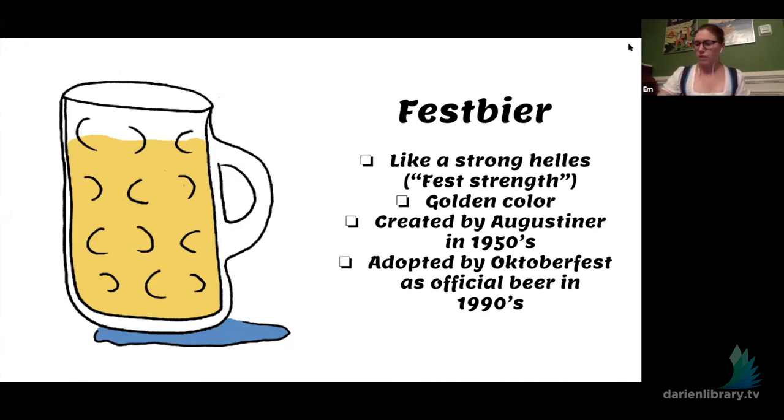The Fest beer was invented in the 1950s by Augustiner, which is a very famous brewery in Munich, and was officially adopted in the 1990s by Oktoberfest because people wanted a lighter beer that they felt was less filling, but still the same alcohol strength. In Germany, only the breweries based in the Munich proper can make Märzens and Fest beers. No one else in Germany can create these beers. They have a lock on it. It's kind of like champagne coming from France. So in America, those rules do not apply. We can brew whatever.